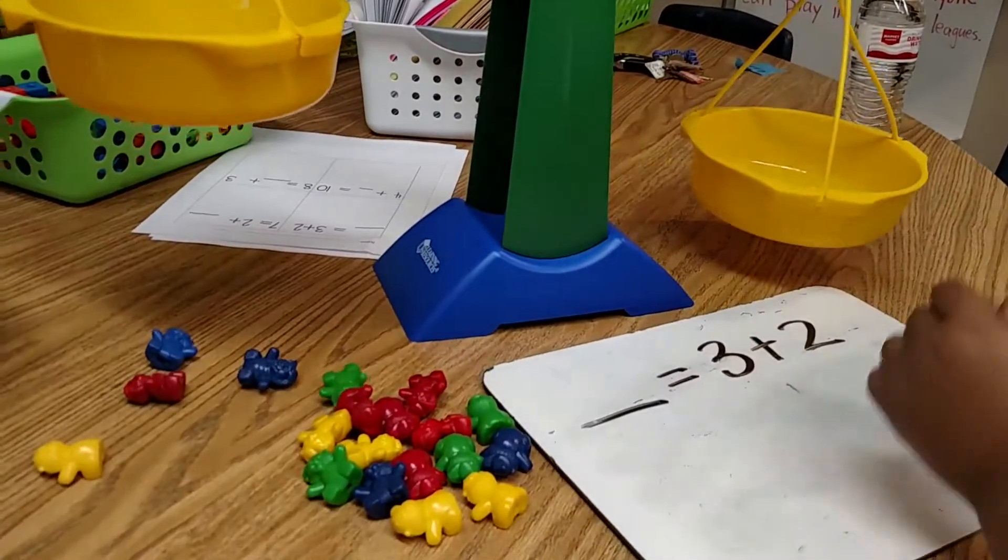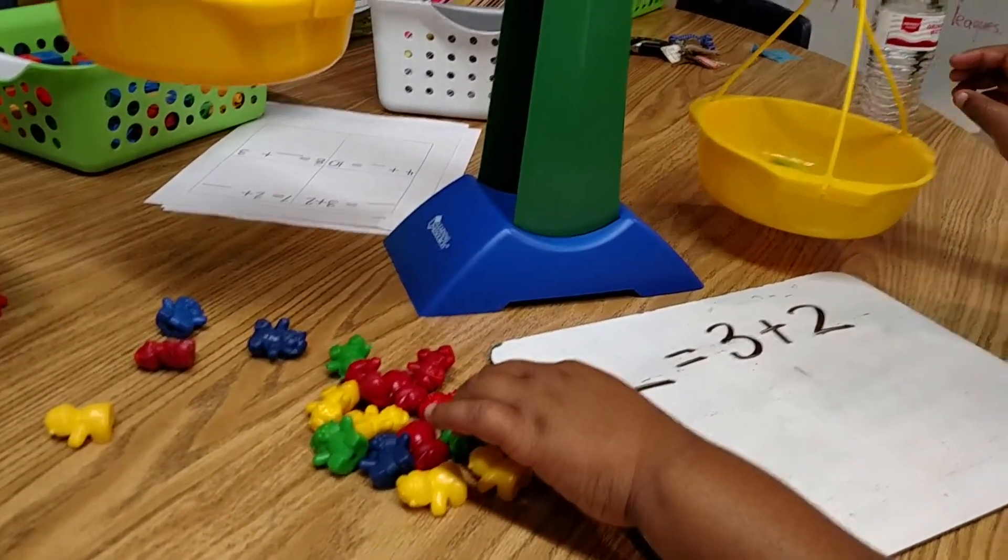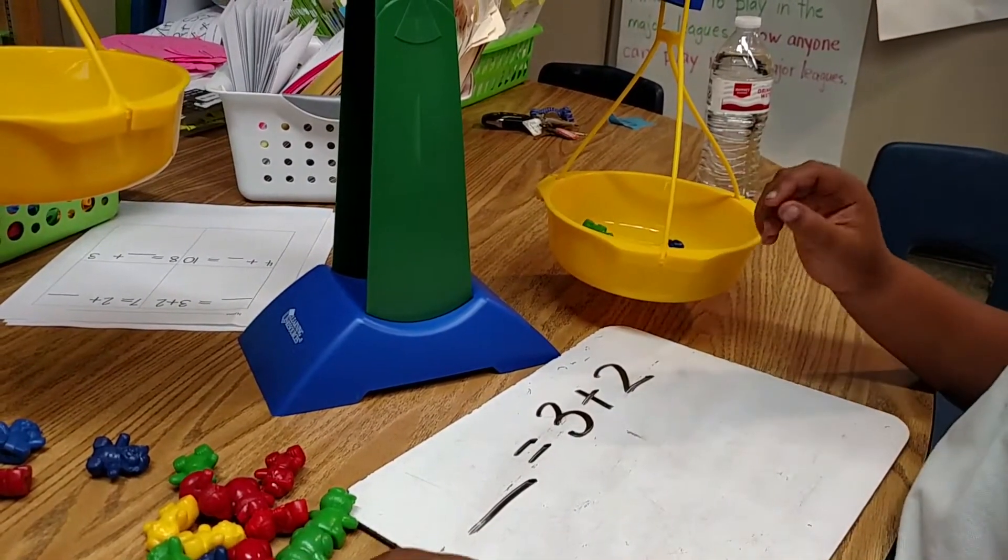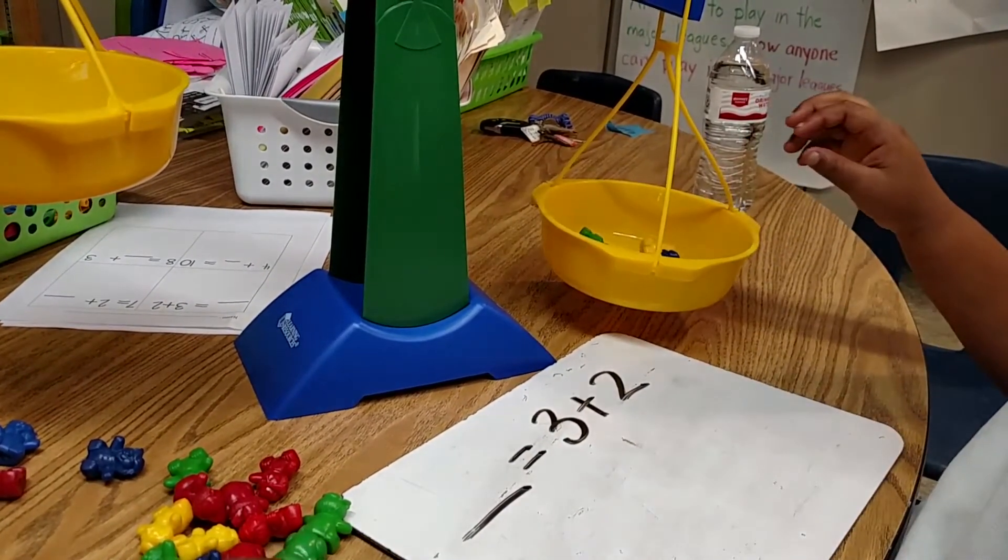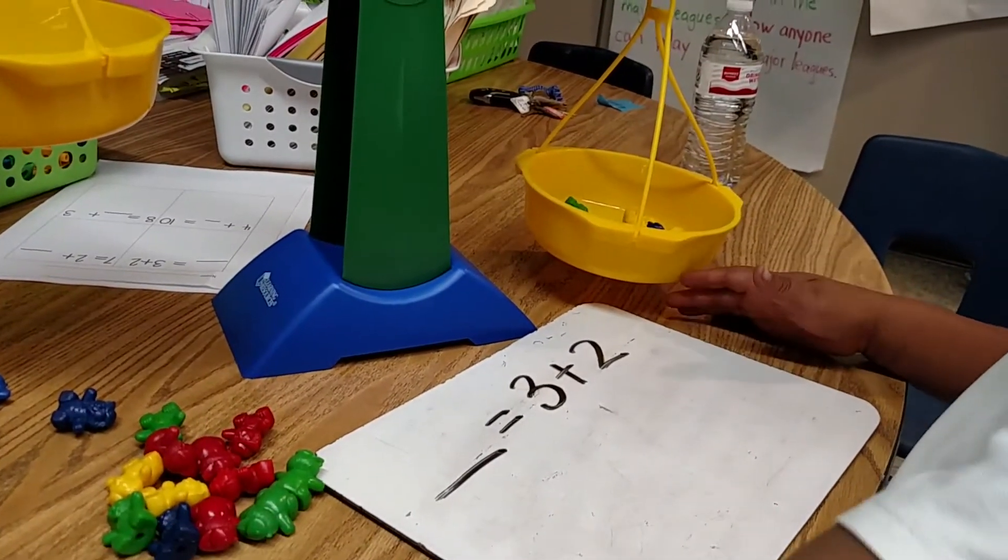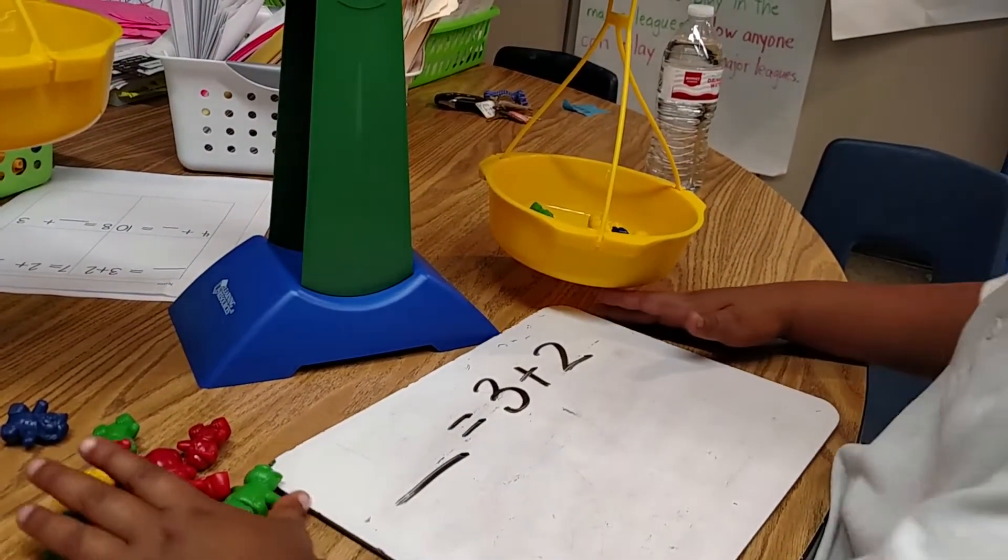Count it out loud. 1, 2, 3, 4, 5. So 3 and 2 more, how much is that? 5. Okay.